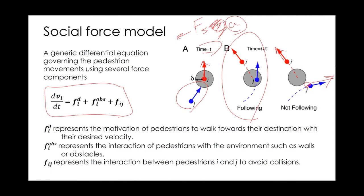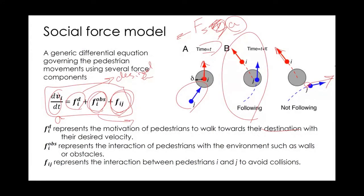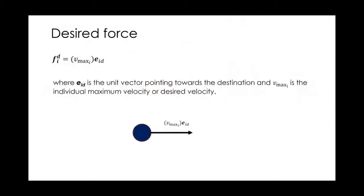Therefore, acceleration, which is the derivative of speed over time, equals the summation of multiple forces. The first term is the desired force, which represents the motivation of the pedestrian to walk towards the destination. The second term is the obstacle force, representing interaction with walls, environments, or any other obstacle. The third term is the interaction force, representing the interaction between pedestrian I and J to avoid colliding with each other.